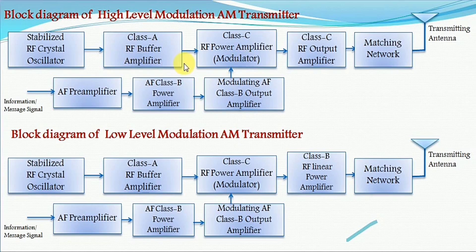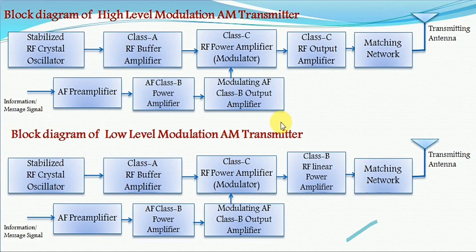To the first input of the modulator, the stable high frequency carrier signal is applied. To the other input, we apply the message signal — a high strength, distortion-free message signal with no information loss. The message signal is generated from the information source, converted to an electrical signal by a transducer, and then passed through multiple stages of class B power amplifiers to obtain a distortion-free, high-strength signal.